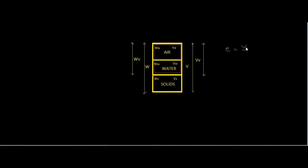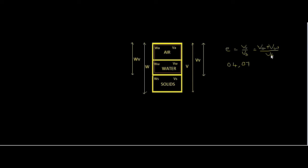The void ratio E is equal to the volume of voids divided by the volume of solids. An important thing regarding void ratio is that it is always expressed only in decimal format — for example, 0.4 or 0.7 — and not in percentage form. Also note that volume of voids includes the volume of voids filled by air and the volume filled by water, so it can also be written as: E = (volume of air + volume of water) / volume of solids.